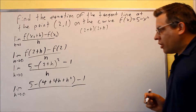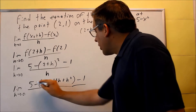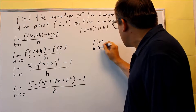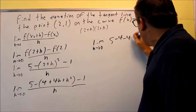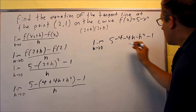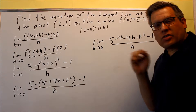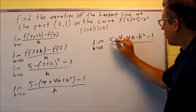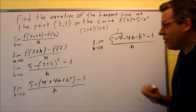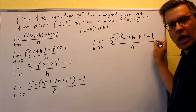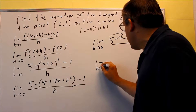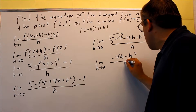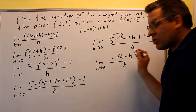And then we have minus 1 at the end. We expand everything out and distribute the negative sign. Taking the limit as h goes to 0, we get 5 minus 4 minus 4h minus h squared, then minus 1. Simplifying: 5 minus 4 is 1, which cancels with the minus 1. So what we're left with on top is negative 4h minus h squared, all over h.